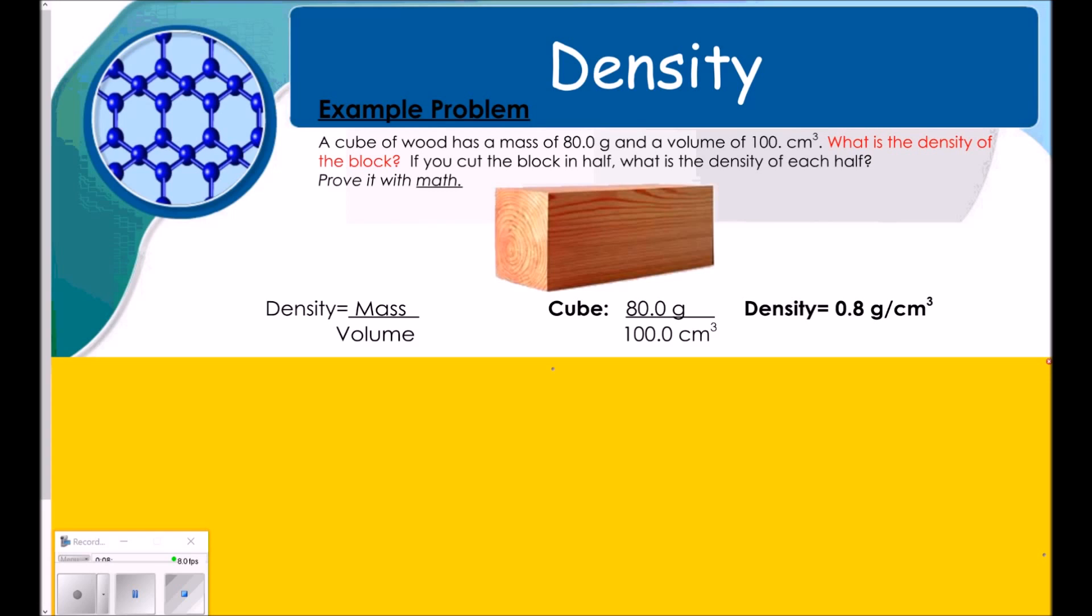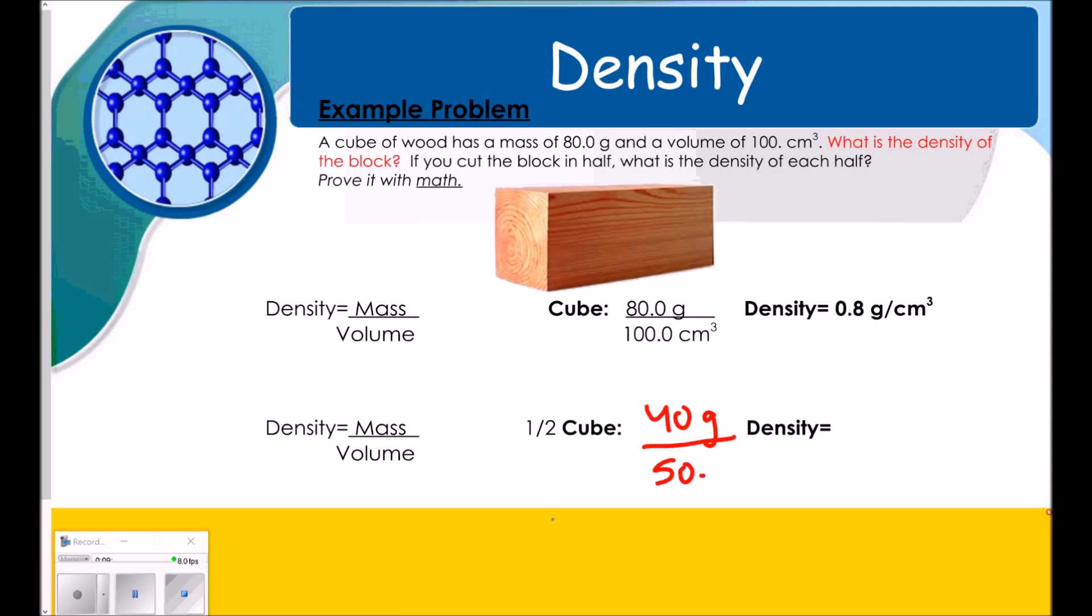The second part says, if you cut the block in half, what is the density of each half? And to prove it with math. So, I want to go ahead and do that. So, density is mass divided by volume. If I cut this cube in half, then the mass is going to cut in half. So, it's going to be 40 grams. And then, if I cut it in half, it's going to take up half the volume. So, it's going to be 50 centimeters cubed. So, when I do 40 divided by 50, lo and behold, I still get 0.8 grams per cubic centimeter. What we just proved to you is that density is intensive. It does not change with the amount of the substance. It is a constant.